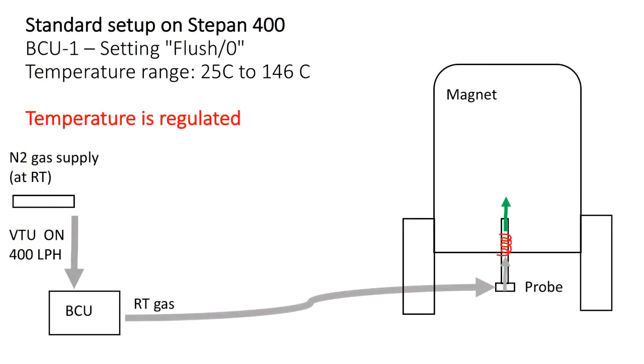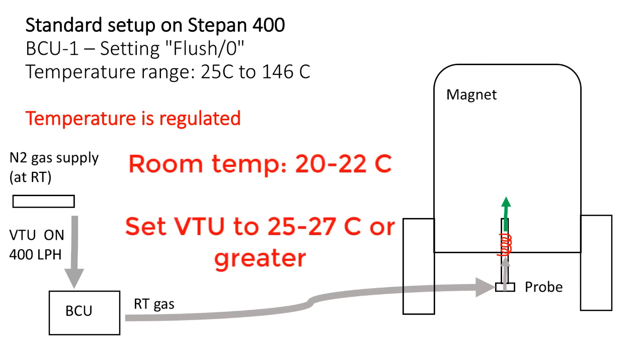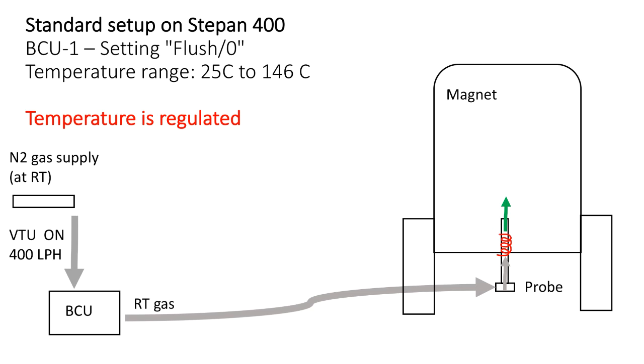When VTU is turned on, it begins supplying 400 liters per hour of gas to the BCU, which supplies it further to the probe, and the probe heater heats it up to the temperature necessary for the NMR experiment. The lowest regulated temperature for the experiment is about 5 degrees greater than temperature of the gas supply. With the room temperature gas supplied at 20 to 22 degrees C, we should set VTU to 25 to 27 degrees C or greater for effective regulation.